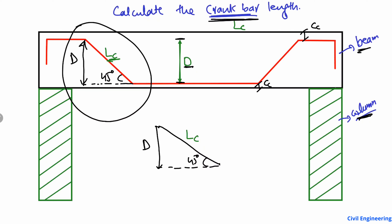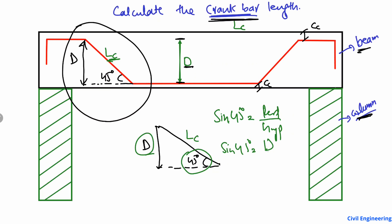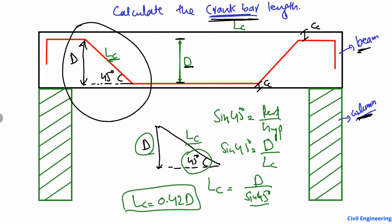Using trigonometry: sin(45°) = perpendicular / hypotenuse. The perpendicular is D and the hypotenuse is LC. So we get LC = D / sin(45°). Dividing by sin(45°), we get LC = 1.414 × D, which simplifies to LC = 0.42 × D... wait — LC equals D divided by sin(45°), which gives LC = 0.42 × D. So this is the formula for the length of the crank bar.